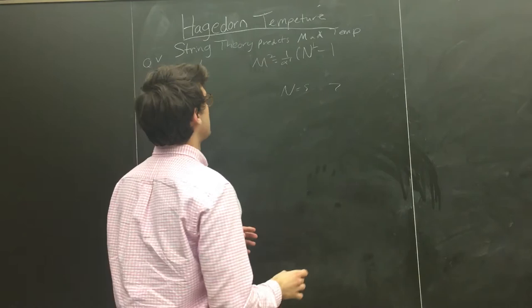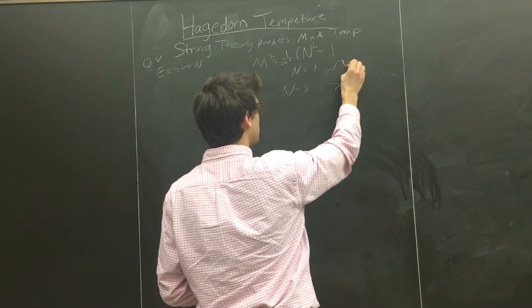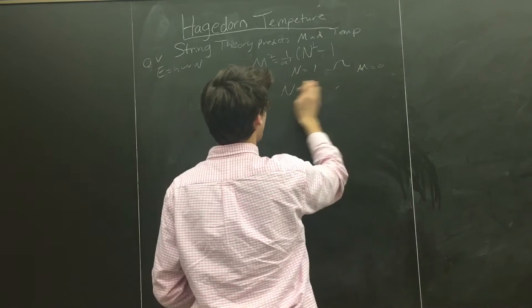We have seven different types of string configurations that give you this energy or mass. So, for n equals 1, you know, we only have one configuration, and then that actually gives you a massless state. For n equals 0, the ground state, you get a tachyon, you get imaginary mass.